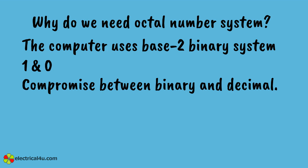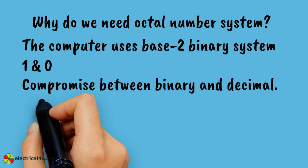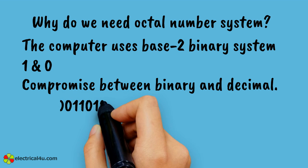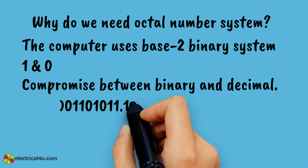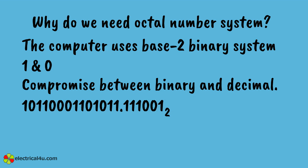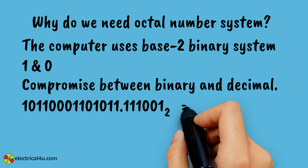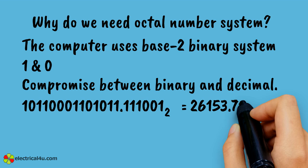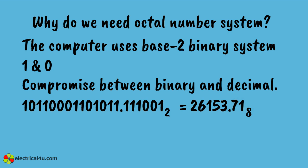For an example, the binary number 10110001101011.111001 with base 2 is converted to octal, and the result is 26153.71 with base 8. This is done by grouping three consecutive binary digits starting from the right and writing their equivalent octal digits instead.